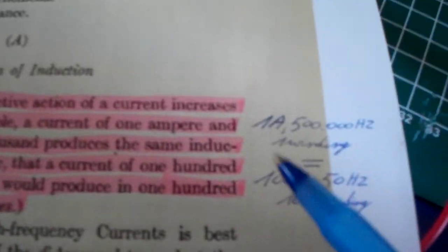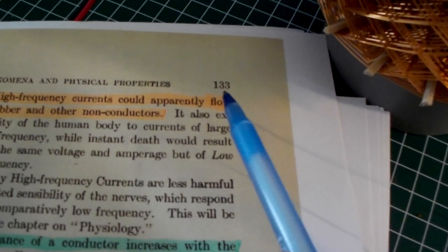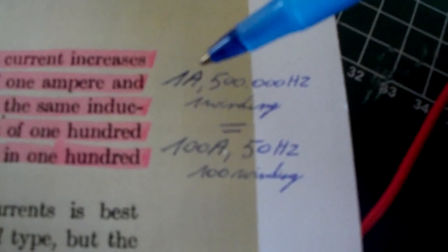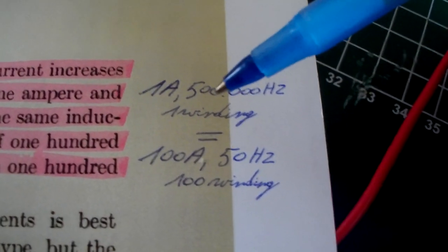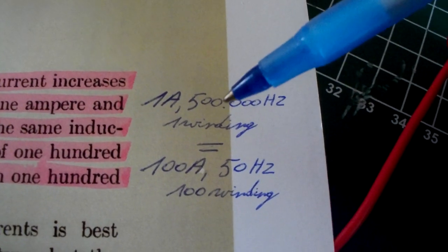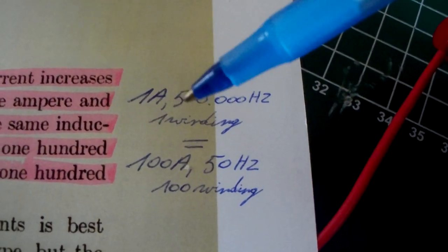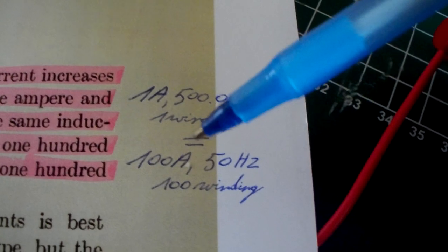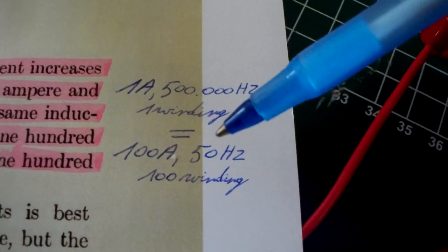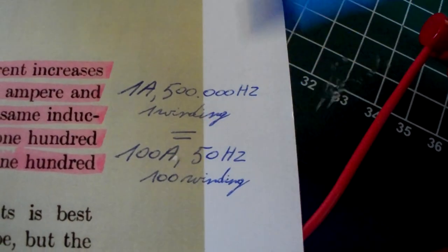At page 133 in that book, we come to a sentence, and it all comes down to the fact that one ampere of current with a frequency of 500 kilohertz in one winding gives the same inductive action as 100 amperes at 50 Hertz in 100 windings.